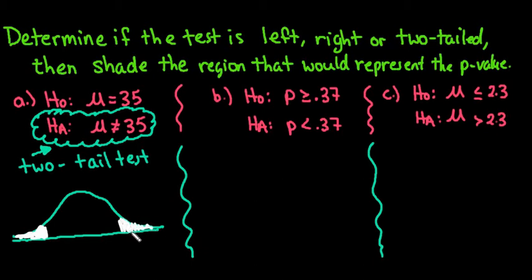For this one, since it says to represent the p-value, half of my p-value would be here, and half would be in the other tail. So my p-values are split up between the two tails. Moving into the next one.